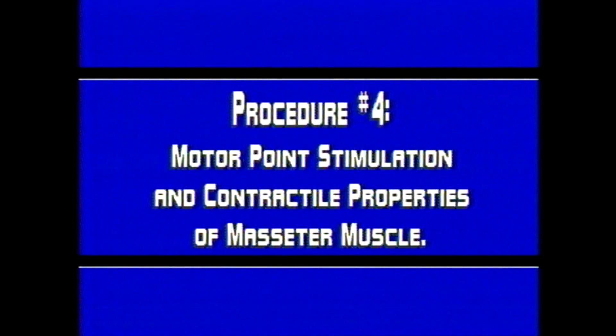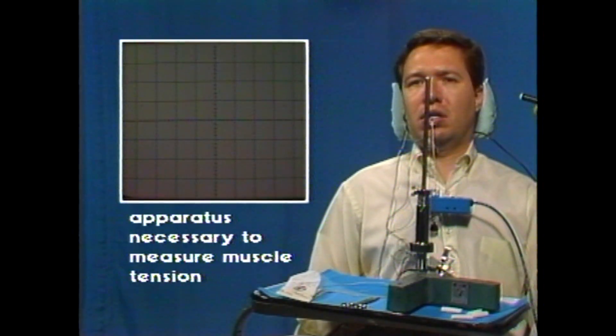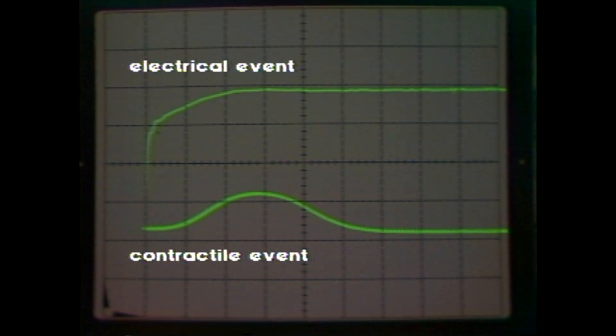In this procedure, the motor point for percutaneous stimulation of the masseter muscle is located and marked. This is a point below the zygomatic bone and in the periauricular region where the masseteric nerve enters the masseter muscle. An isometric transducer is attached to an acrylic splint to measure muscle tension. A single submaximal square wave electrical stimulus, approximately equal to 0.5 milliseconds duration and 20 volts, is applied to produce a twitch contraction of the masseter muscle. Electrical activity in the muscle will precede the mechanical contractile event as seen in the lower trace.